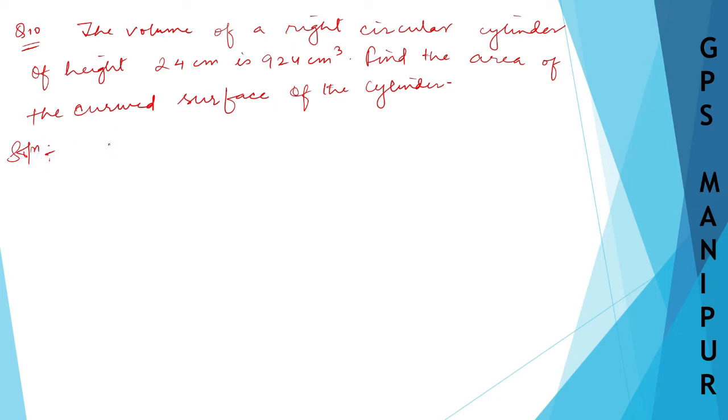The question says the volume of a right circular cylinder of height 24 cm is 924 cm³. So we have volume which is 924 cm³, and the height is given as 24 cm.